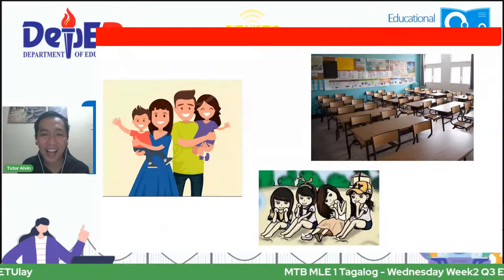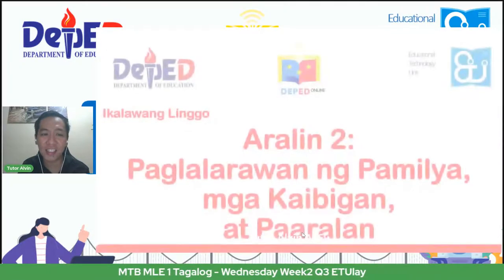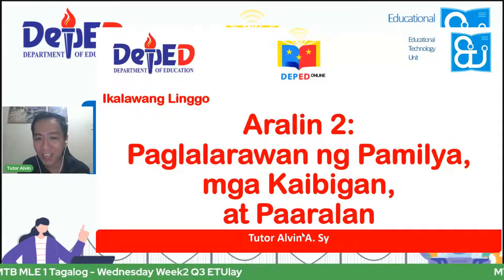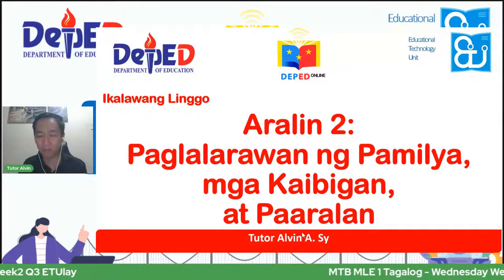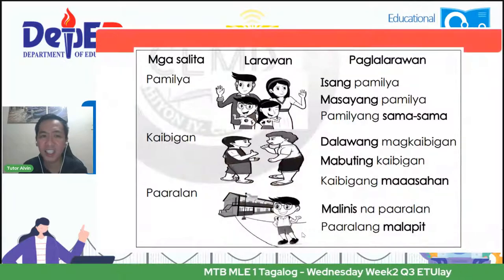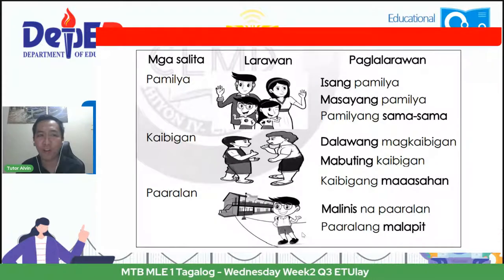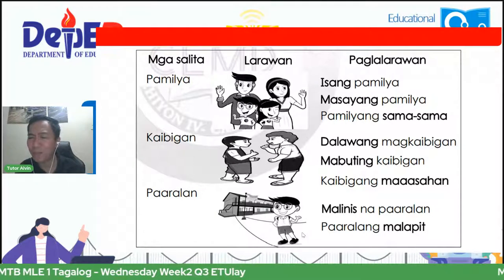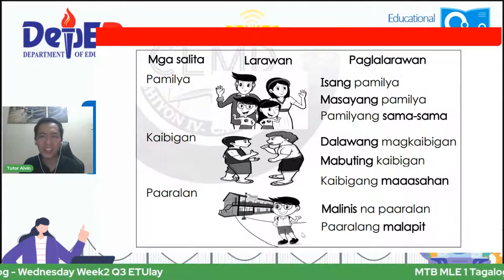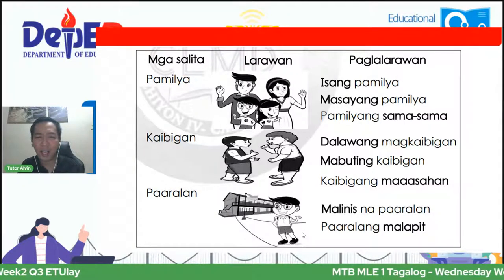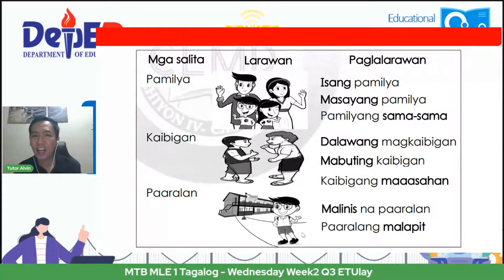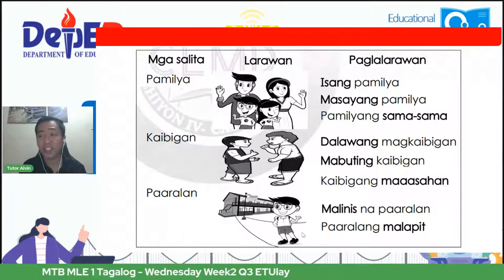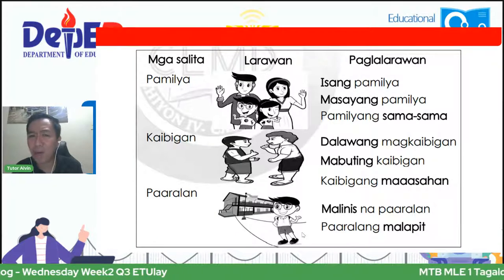Ang ating aralin sa araw na ito ay may kaugnayan sa paglalarawan ng pamilya, mga kaibigan, at paaralan. Sabi rito, mga salita, larawan, at paglalarawan. Sa araw na ito, tatalakayin natin ang paglalarawan. Pamilya — ano ang paglalarawan sa nakikita ninyo sa larawan?